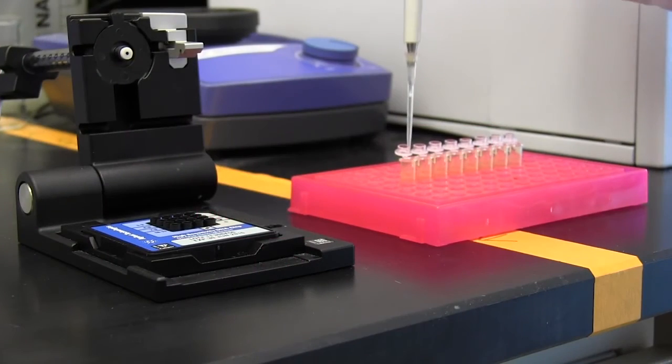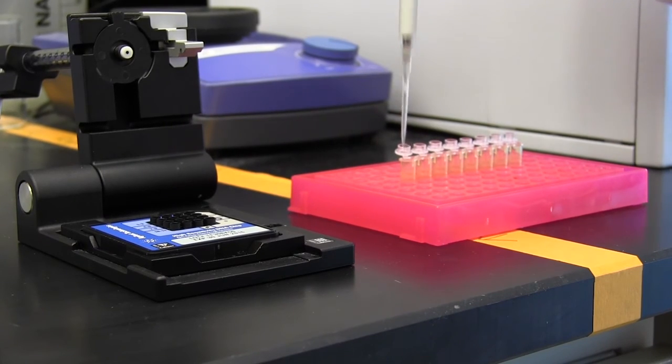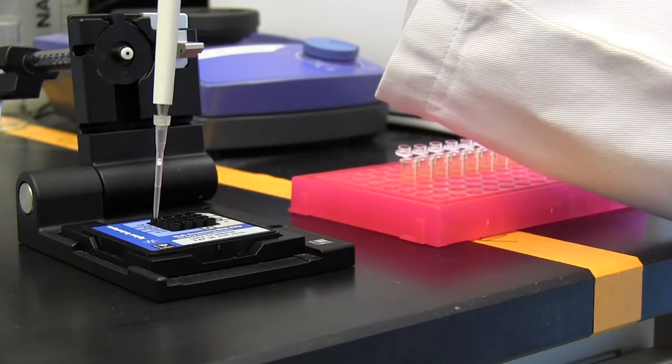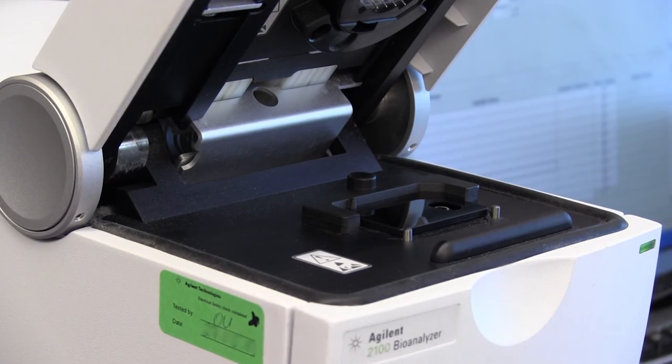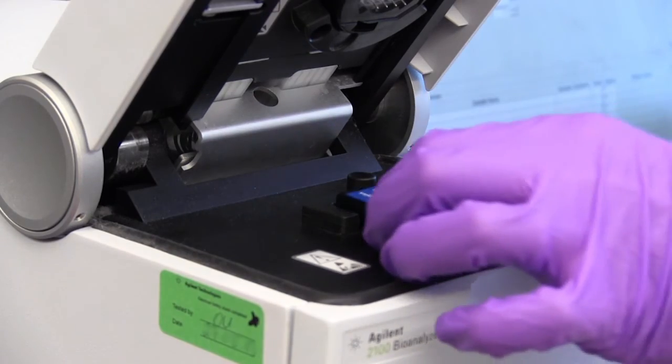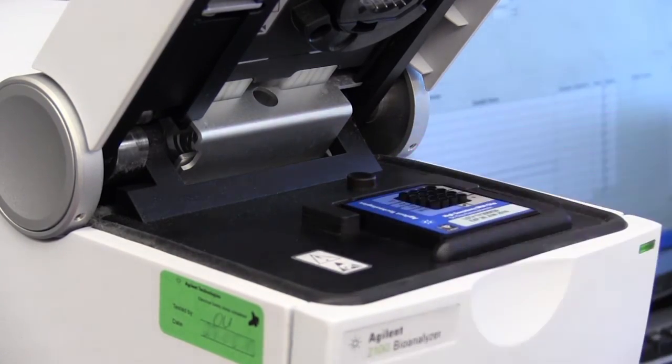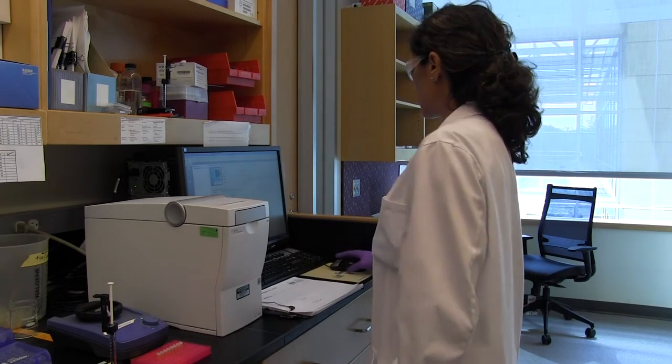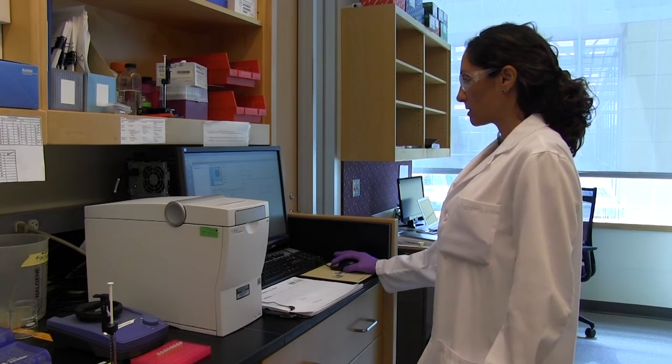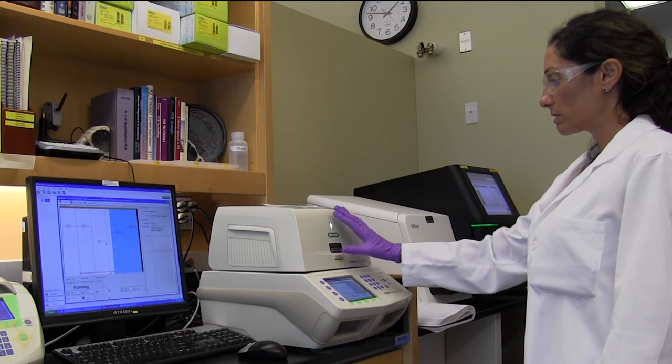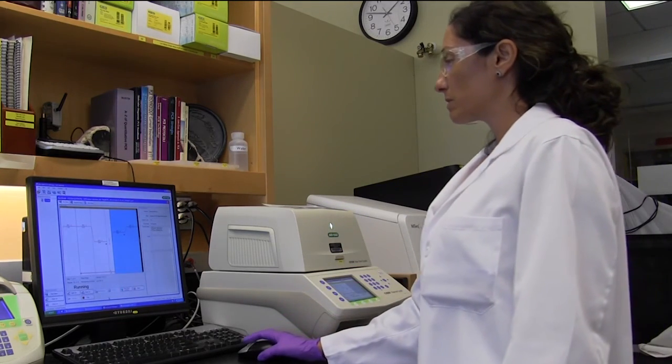You can confirm the size distribution of the library by diluting one microliter of the library five-fold with 10 millimolar Tris hydrochloride or 0.1X TE buffer and running it on a bioanalyzer using the high sensitivity chip. The final library can be quantitated using qPCR-based methods such as the NEBNext library quant kit or using electrophoretic methods like the bioanalyzer.